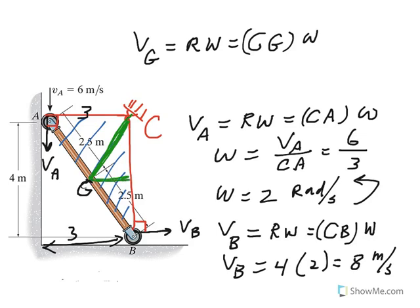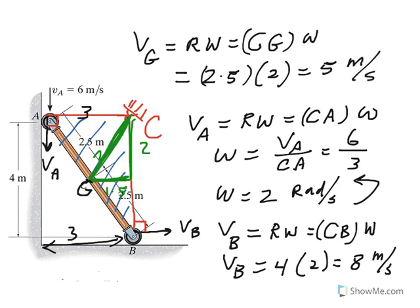This is one and a half, and this is half of four, two. A two and a one and a half will give you a 2.5 actually for CG here. So CG is 2.5, and omega is 2, so that gives you a 5 meters per second.